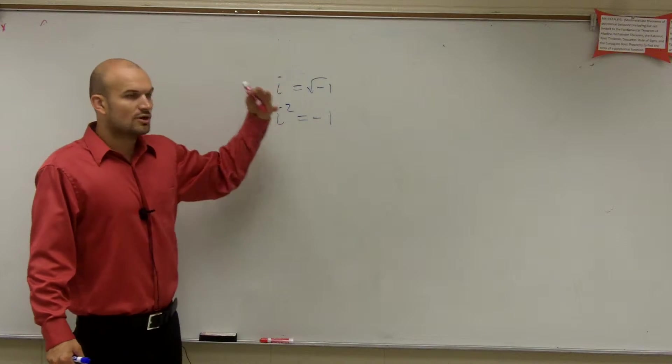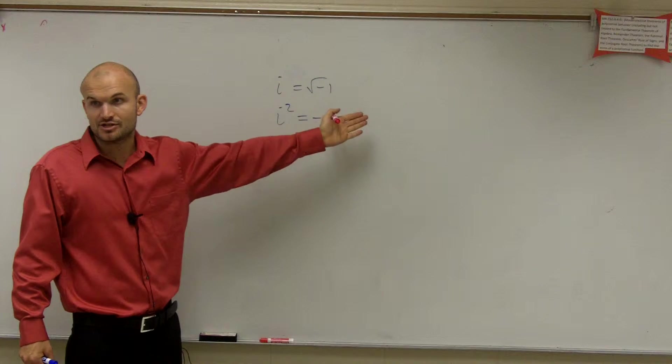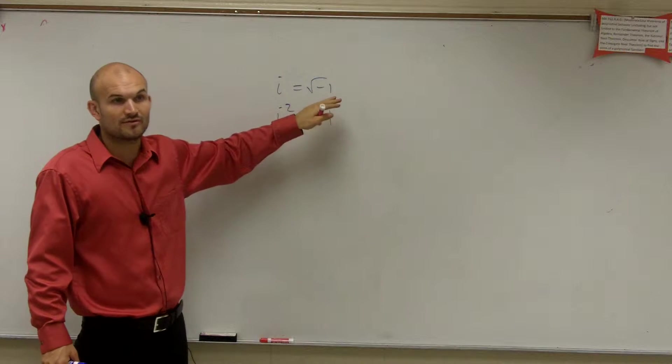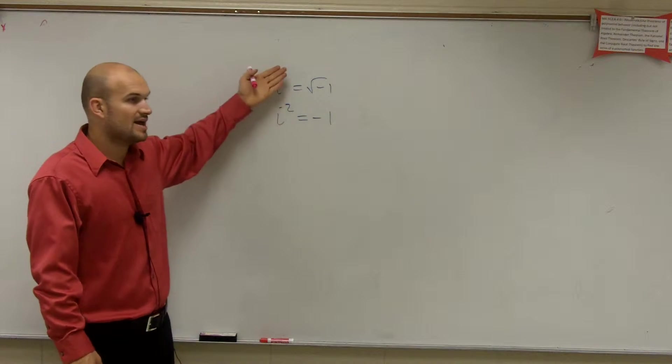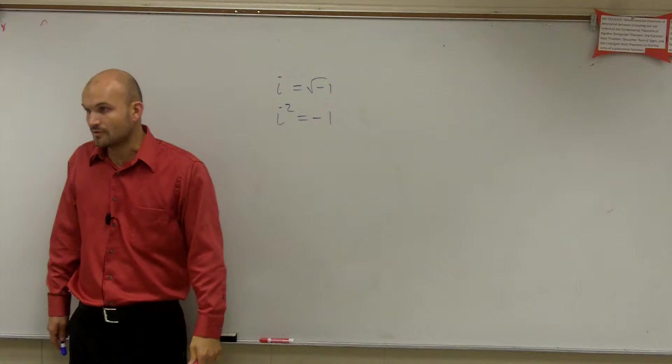So far in this course, we've only talked about what i is, which is our imaginary number to represent the square root of a negative number. And then what we did was we multiplied i times i. We understood that i squared equals negative 1, right?